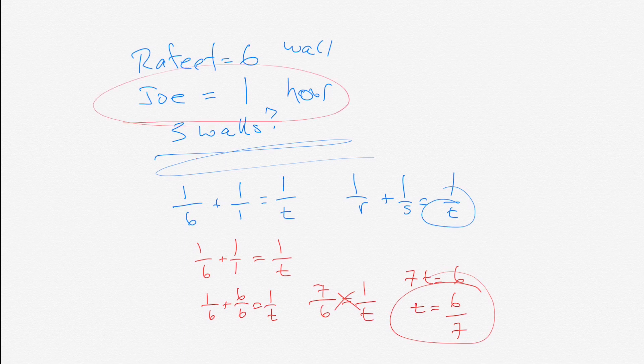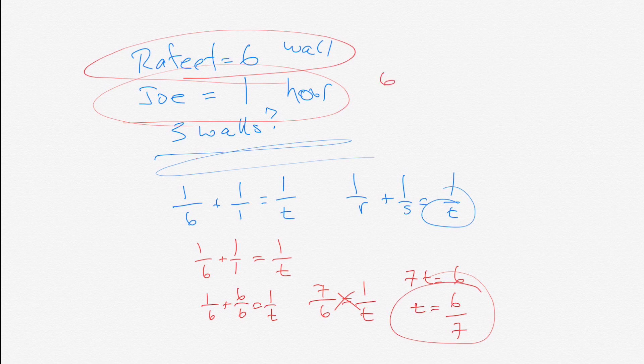Which makes sense, right? Joe does it in one hour, and with the help of the slowpoke Rafif, instead of one hour it takes them six-sevenths of an hour together — so it does help him a little bit. And then if you want to do three walls, you just multiply by three: instead of six-sevenths for one wall, it would be 18-sevenths to do three walls.